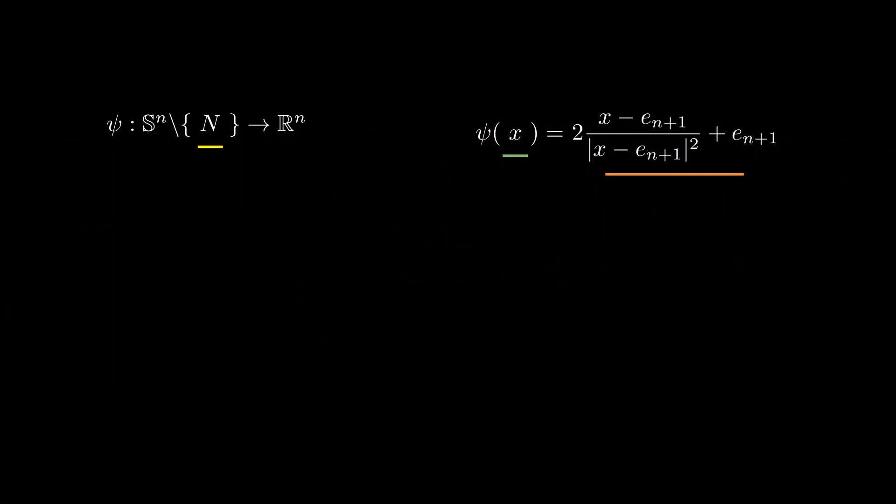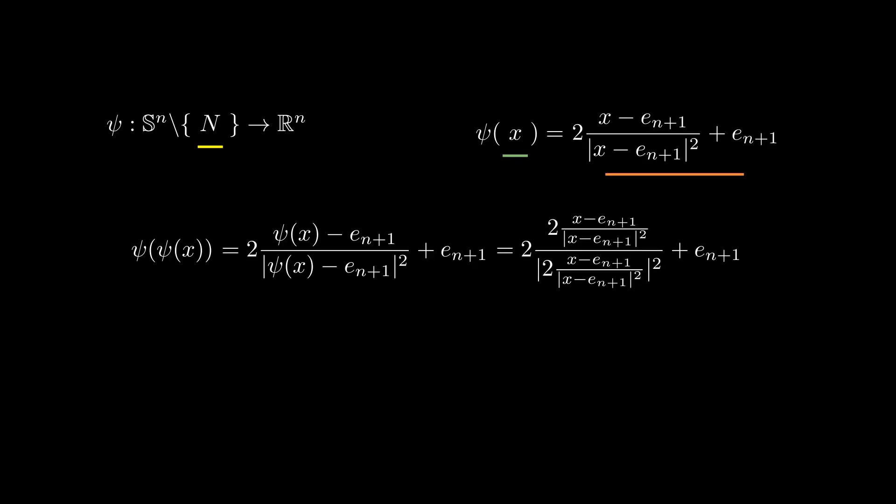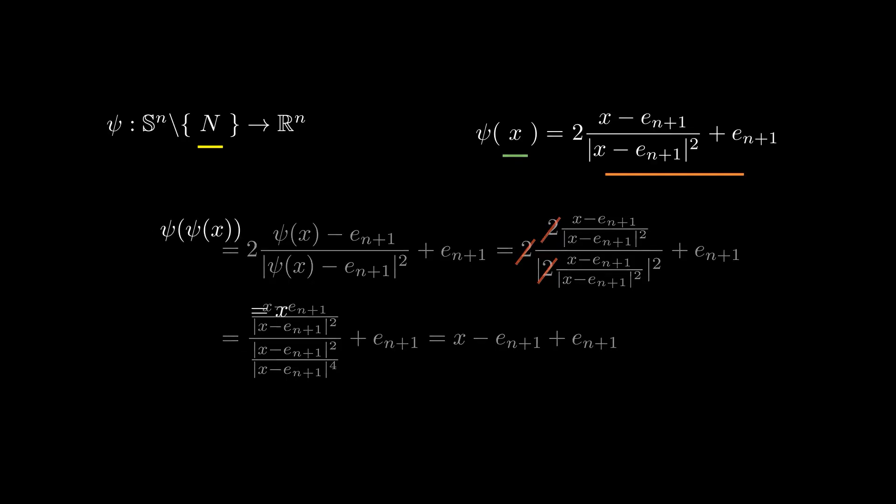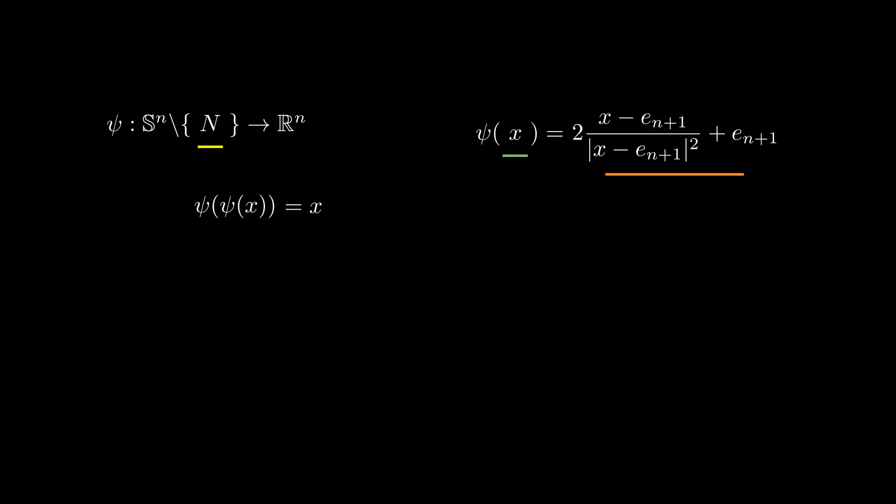Something quite interesting is that psi squared is the identity. To see this, we plug psi into itself, 2 plus e_{n+1} cancels out, and we get a big fraction. In this fraction, we can cancel the 2s, and then we can cancel the term involving the norm of x minus e_{n+1}. What we get in the end is x minus e_{n+1} plus e_{n+1}, which is just x. This shows that psi squared is the identity, and because of that, psi is its own inverse.